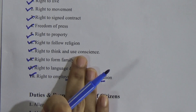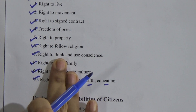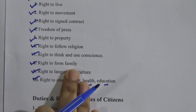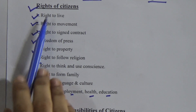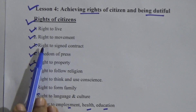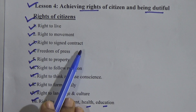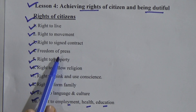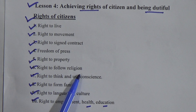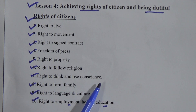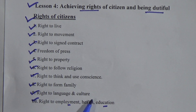You have to memorize all the points because with every point you can get a question. The points are: right to leave, right to movement, right to sign contract, right to freedom of press, right to property, right to follow religion, right to think and use conscience, right to form family, right to language and culture, right to employment, health, and education.